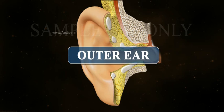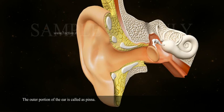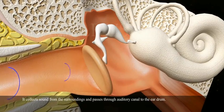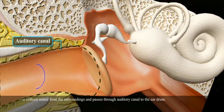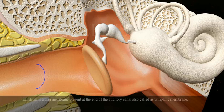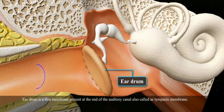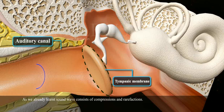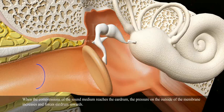The outer portion of the ear is called the pinna. It collects sound from the surroundings and passes it through the auditory canal to the eardrum. The eardrum is a thin membrane present at the end of the auditory canal, also called the tympanic membrane.